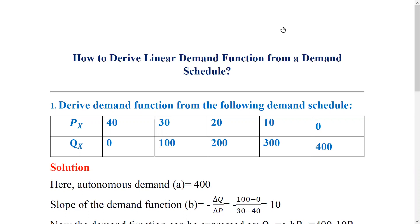Autonomous demand A is the quantity demanded when price is zero — that is, the quantity-axis intercept parameter of the demand function. So A is the intercept or autonomous value of the demand function.